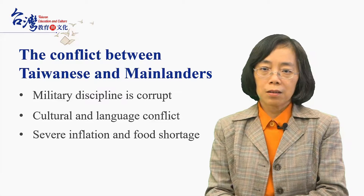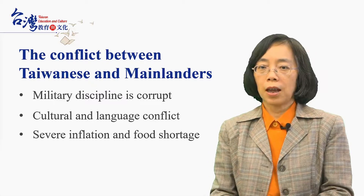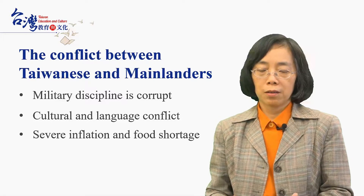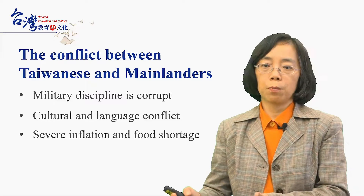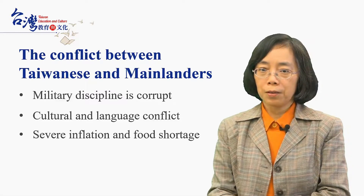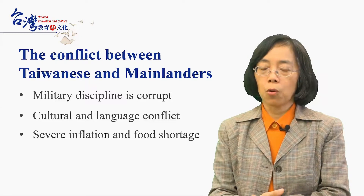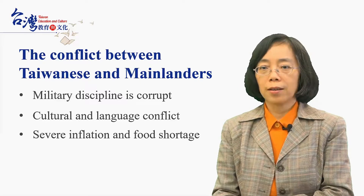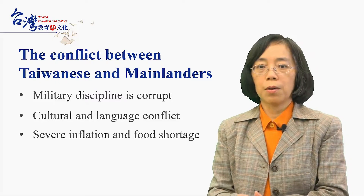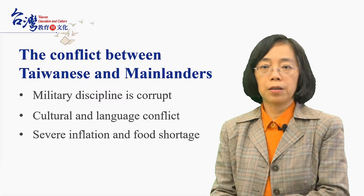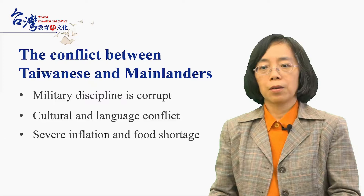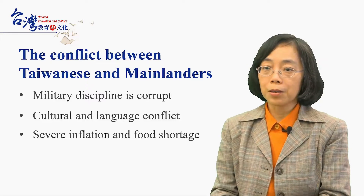The government from China took huge amounts of products — like rice and coal from the mines — and exported them back to China, because a civil war was being fought between the KMT Kuomintang Nationalists and the Communist Party. As a result, Taiwan experienced severe inflation and food shortages. The prices of rice, sugar, and common commodities rose as much as ten times the usual price.